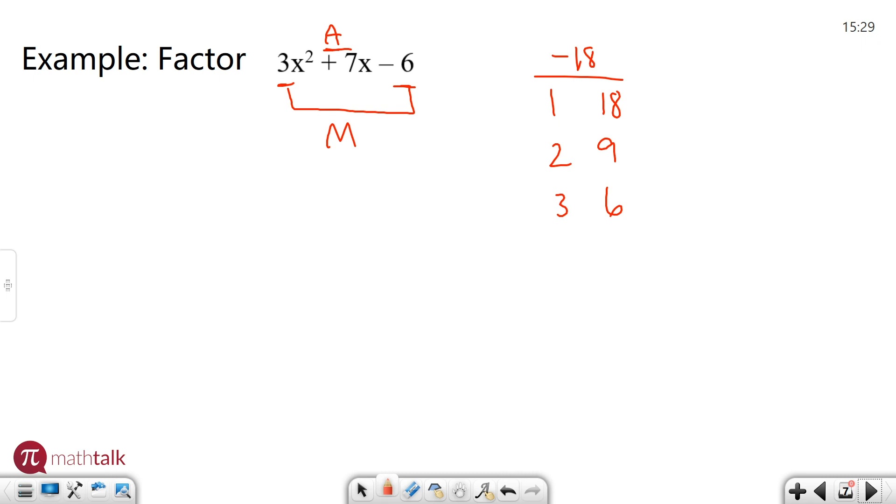Well, one and 18 are not going to work. You can't really get those to add up to seven. Two and nine. Well, if I were to do nine minus two, nine minus two is seven, so that could work. Minus two, positive nine. And that actually is the only one that's going to work. Three and six don't help us out. So these are the two numbers that I need.